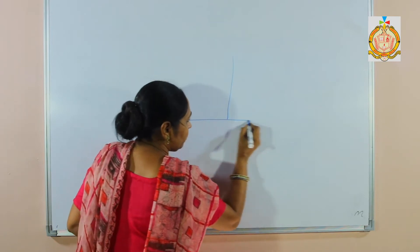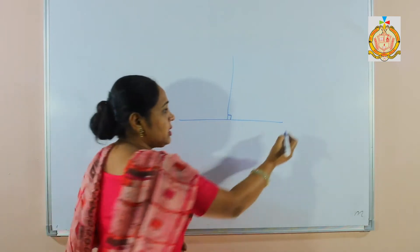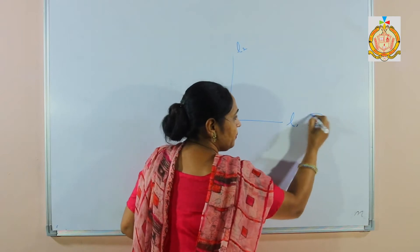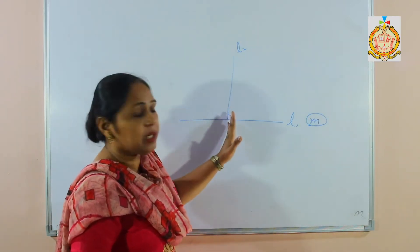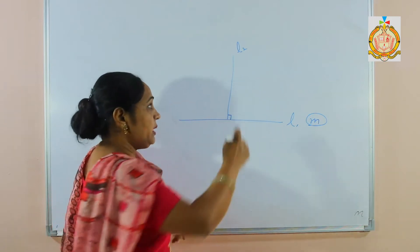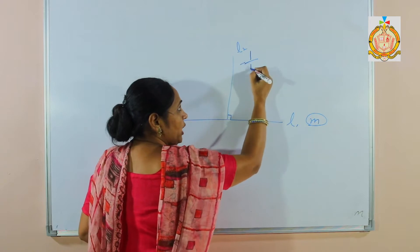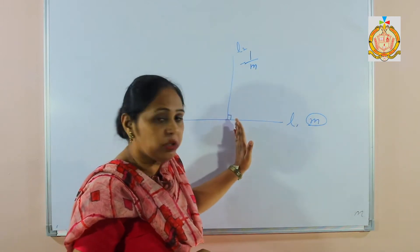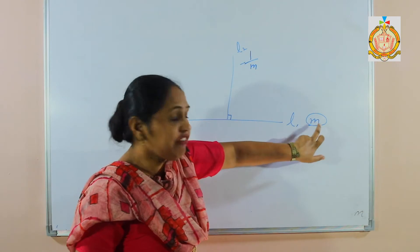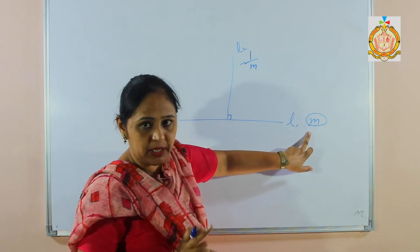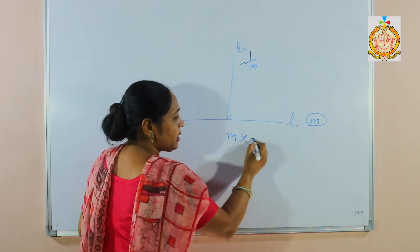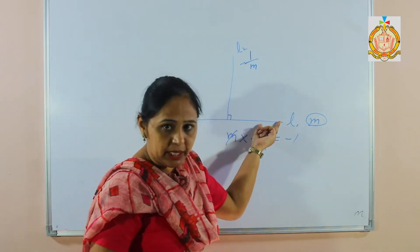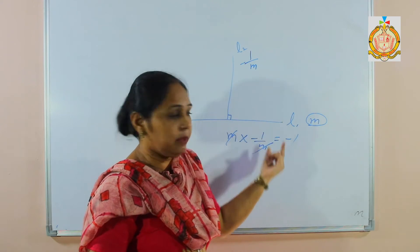In the case of perpendicular lines, these two lines are perpendicular. If the slope of line 1 is m, then the perpendicular line has a slope that is the negative reciprocal of m — that is, minus 1 upon m. We can check perpendicularity by multiplying the slopes of the two lines: the product becomes minus 1. If the lines are perpendicular, the product of their slopes will be minus 1.